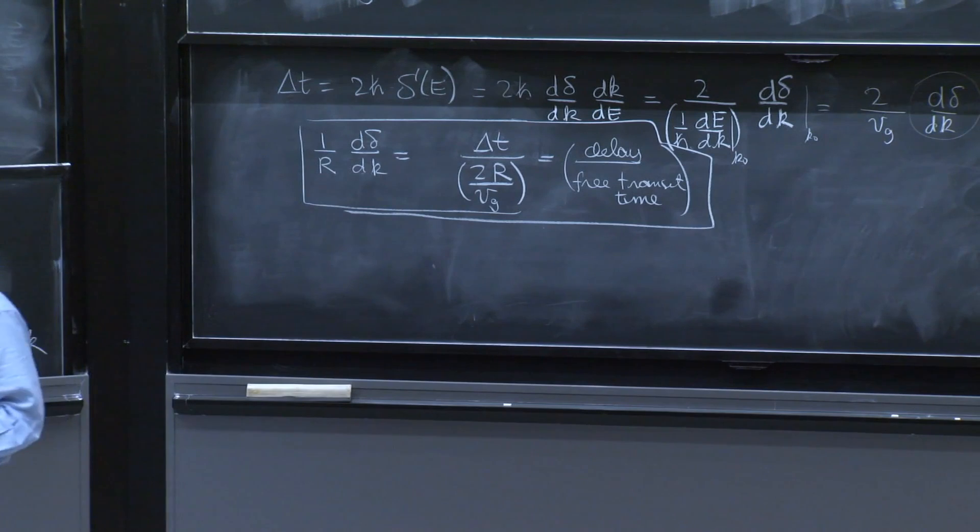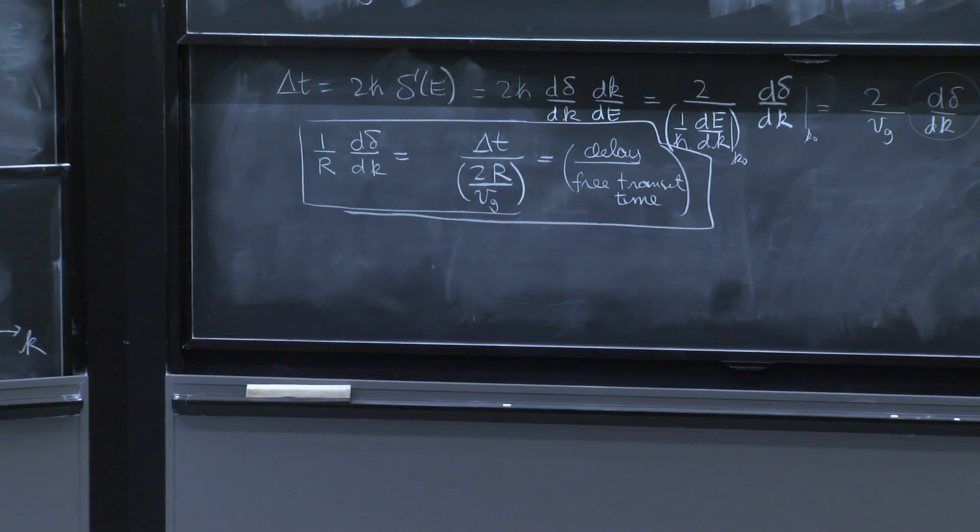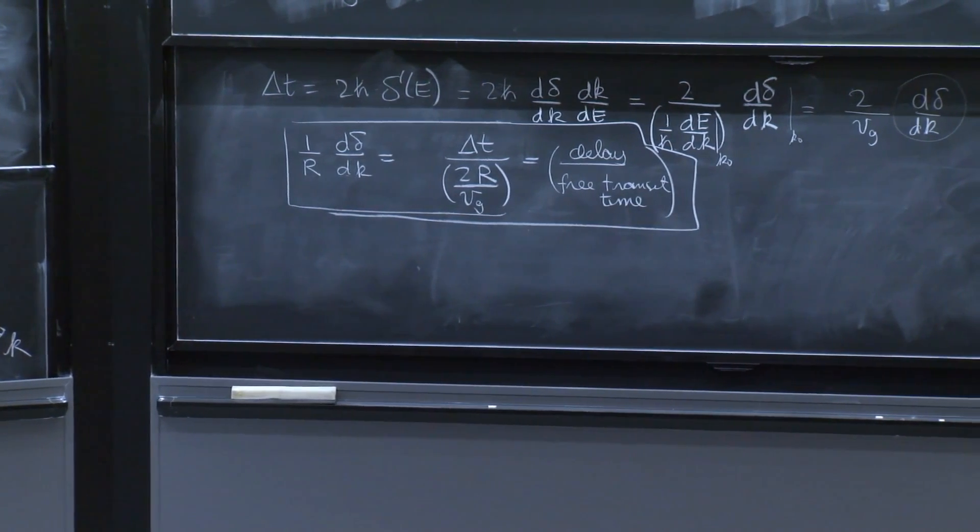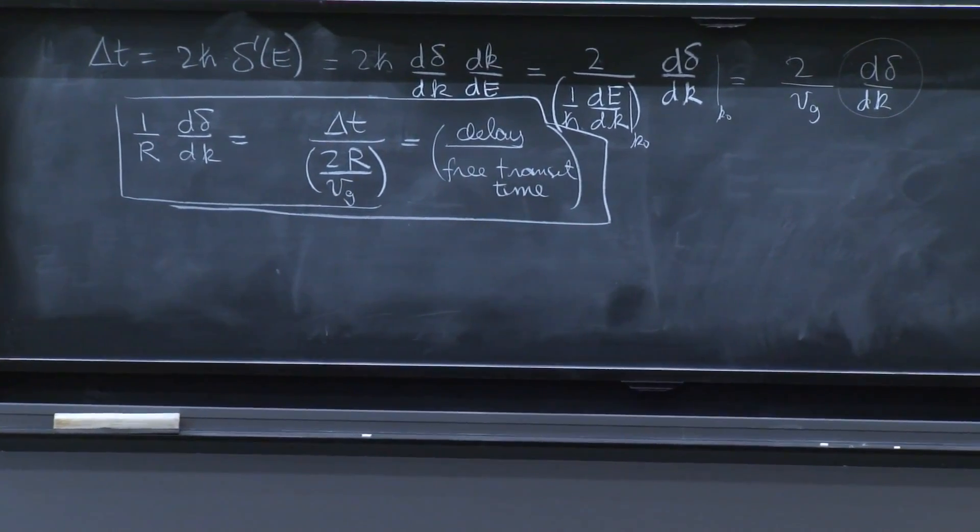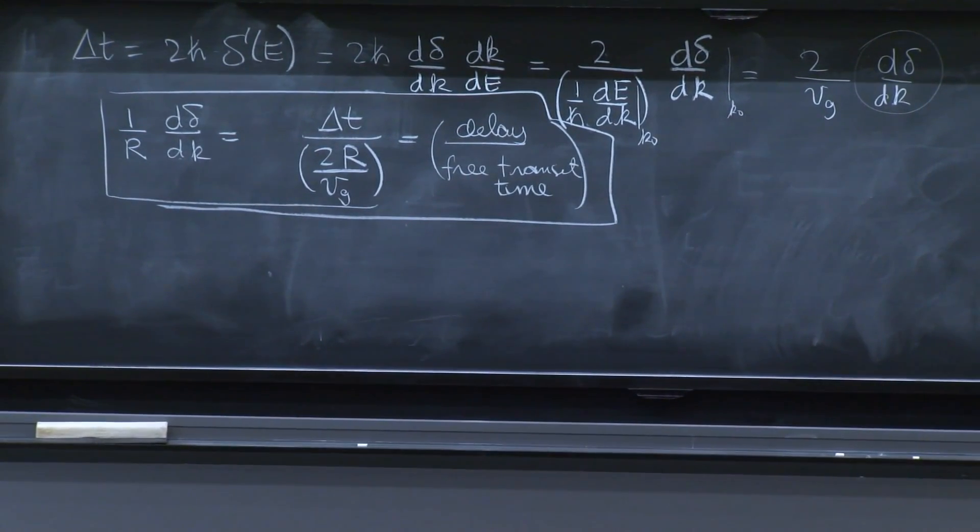It's kind of a nice quantity. Basically, you're dividing your delay and comparing it with the time that it takes a particle, with the velocity that is coming in, to do the bouncing across the finite range potential.